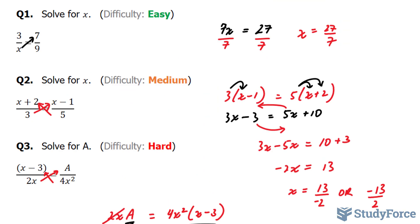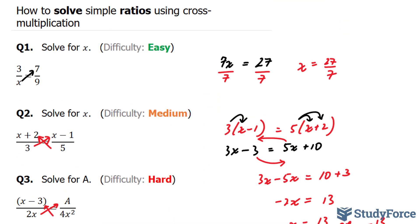And so there you have it. That is how to solve simple ratios using the cross multiplication method.